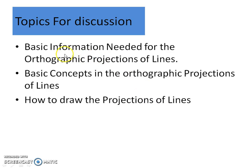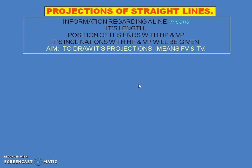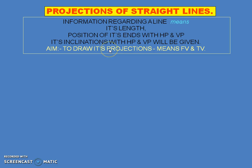Today's topic is the basic information needed for the orthographic projection of lines, the basic concepts, and how to draw the projections of lines. The required information includes the length of the line, the position of its two ends with respect to HP and VP, and if it is inclined to any plane, the inclination also. We are considering front view and top view in this session; side view will be considered later.